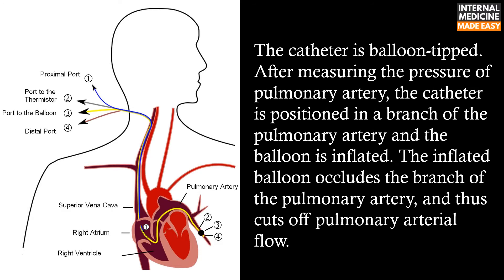The catheter is balloon tipped. After measuring the pressure of the pulmonary artery, the catheter is positioned in a branch of the pulmonary artery and the balloon is inflated. The inflated balloon occludes the branch of the pulmonary artery and thus cuts off pulmonary arterial flow.